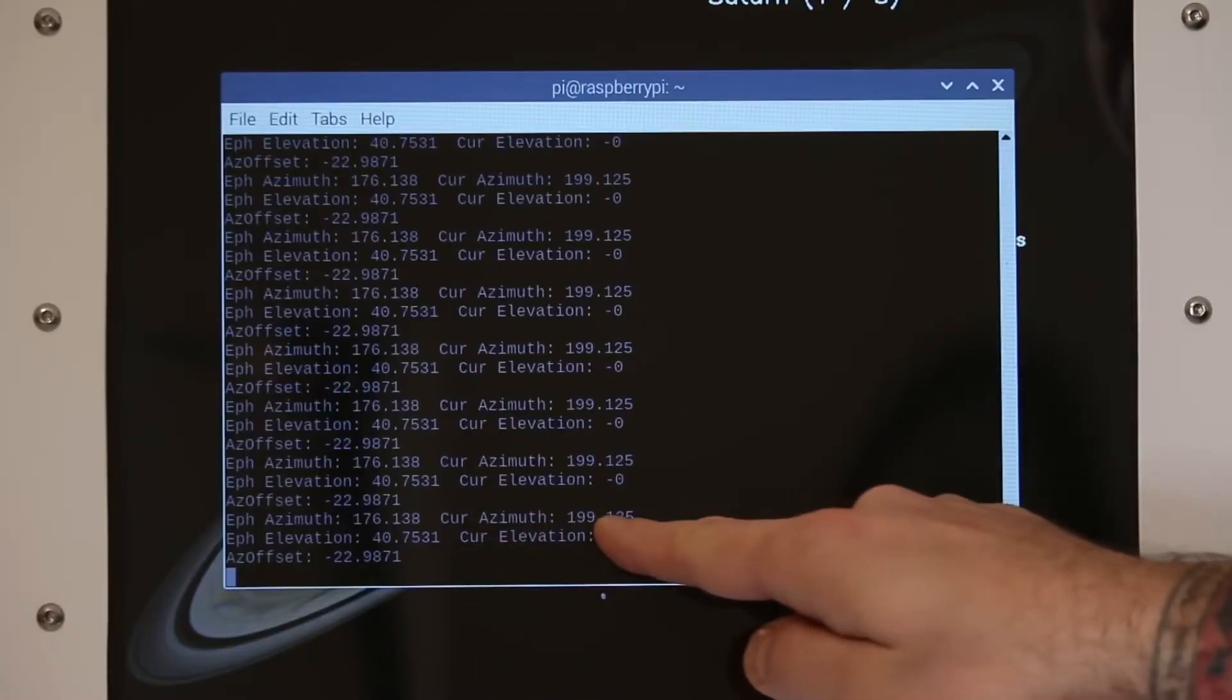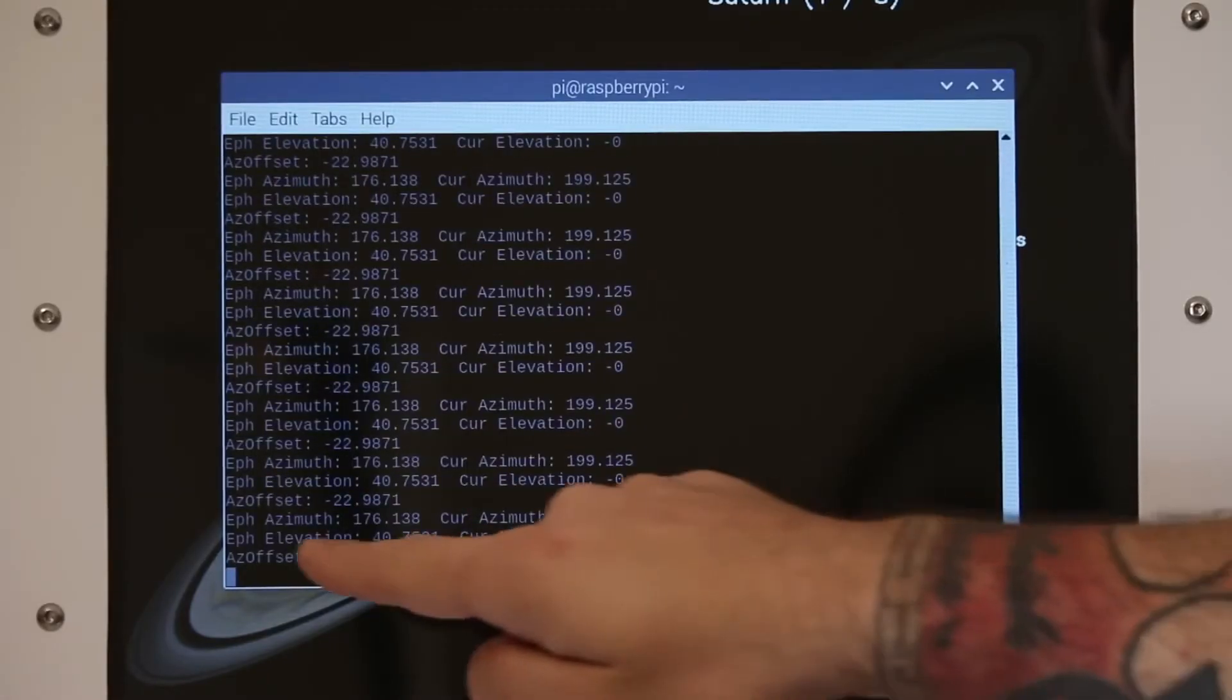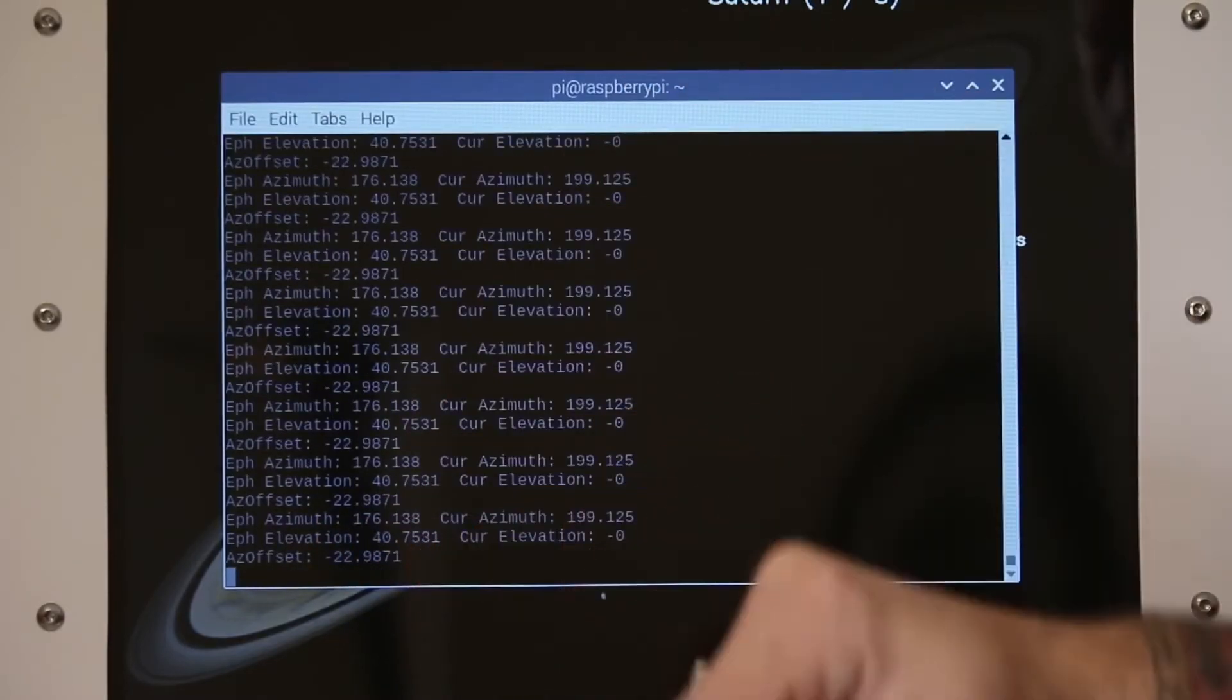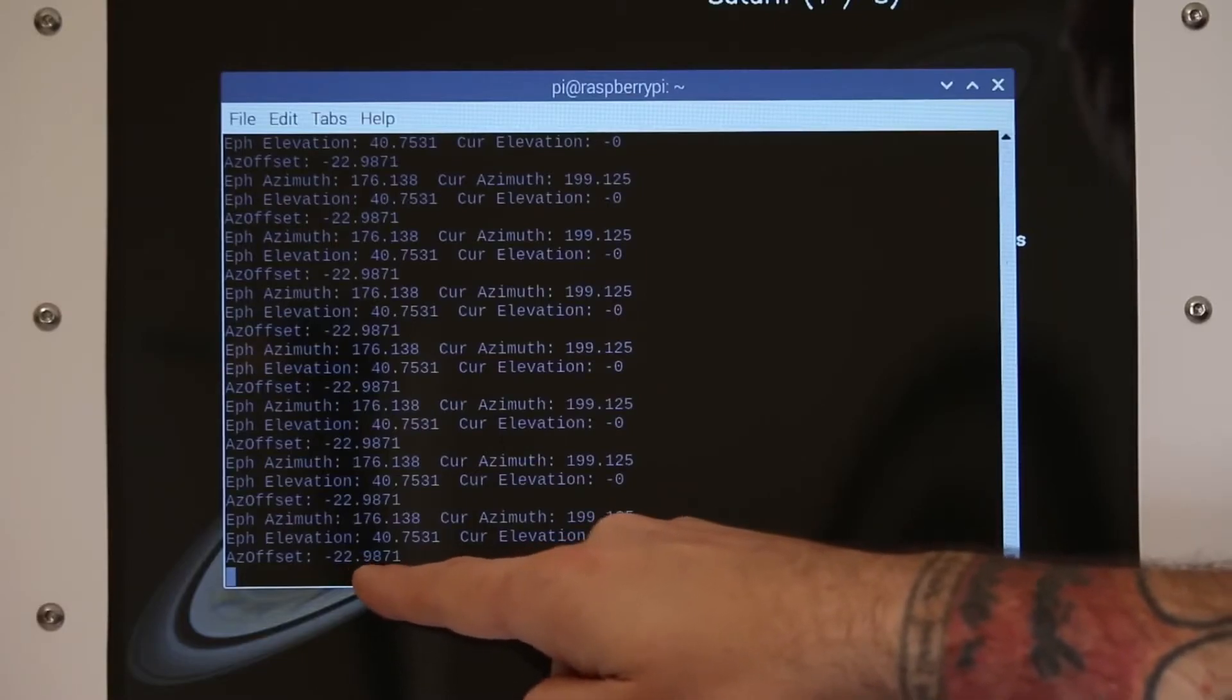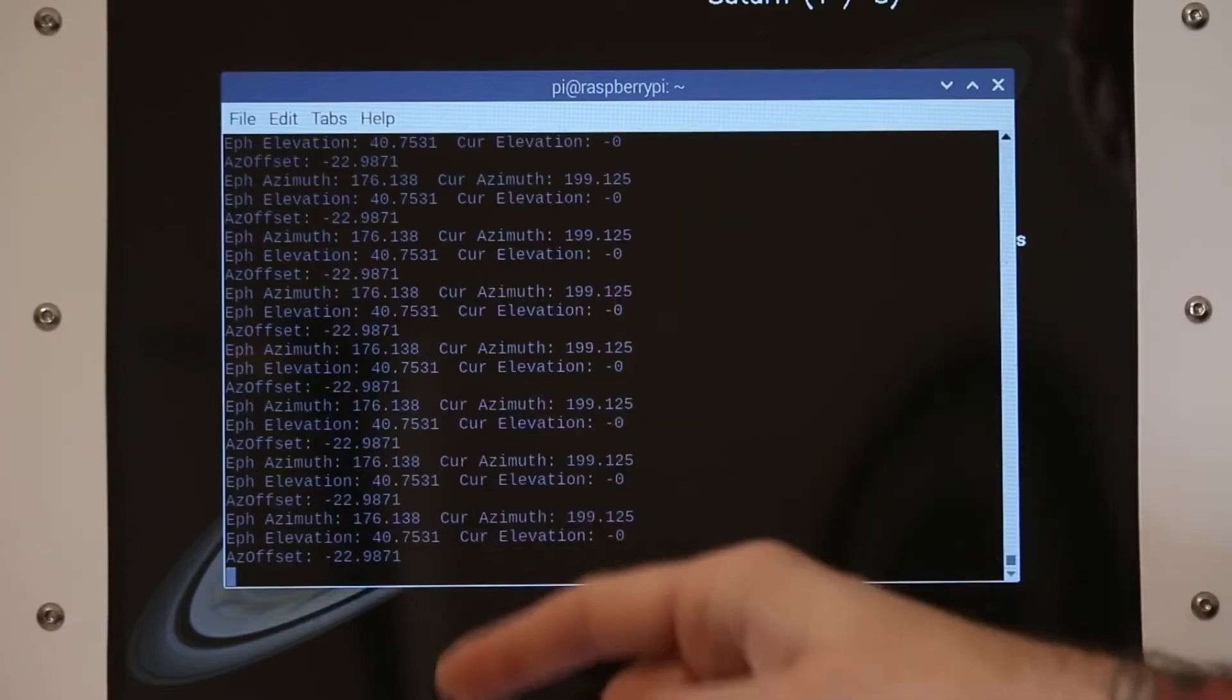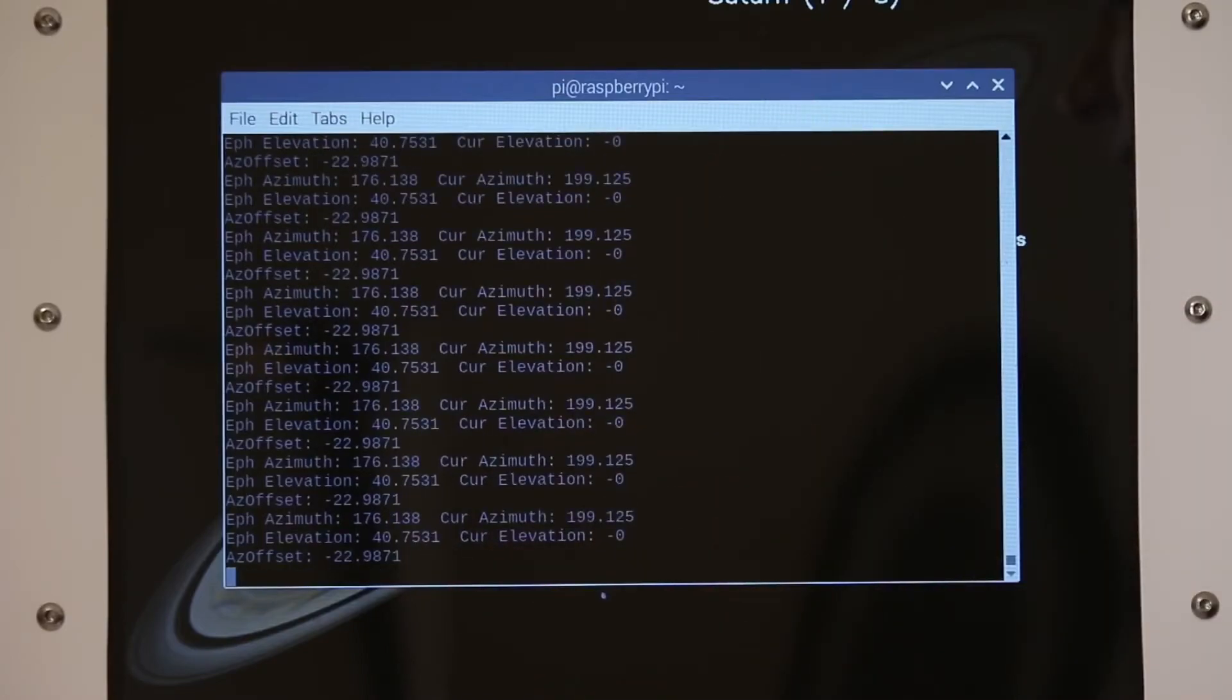Taking the position, so I have my current azimuth from the IMU and my actual planet - that's the actual position of Saturn up in the sky. And it shows me my offset in azimuth. So I need to rotate negative 22 degrees to get to Saturn. So let's flip the switch and watch it go.